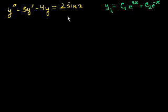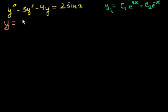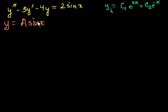With undetermined coefficients, think to yourself: what function, when I take its second and first derivatives and add and subtract multiples of them, will give sine of x? Well, two functions end up with sine of x when you differentiate — sine and cosine of x. So our guess is y = a*sine(x) plus b*cosine(x). Whatever argument appears on the right-hand side, you want matching arguments here. If it were sine of 2x, I'd use sine of 2x and cosine of 2x.